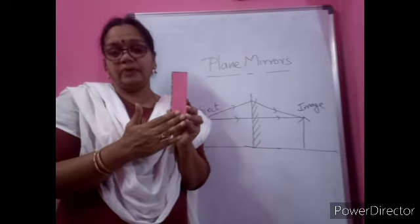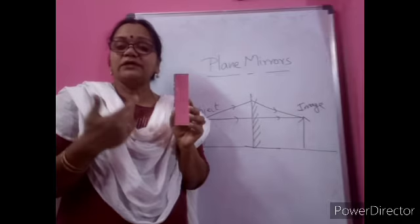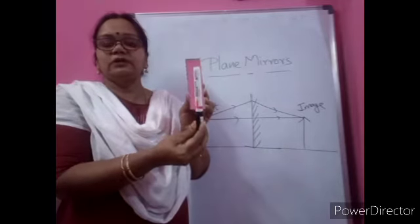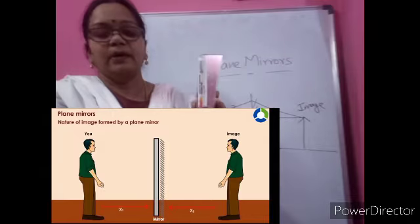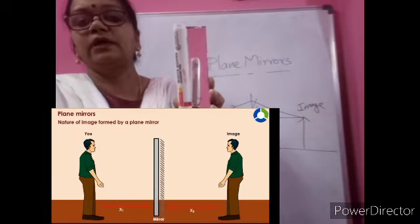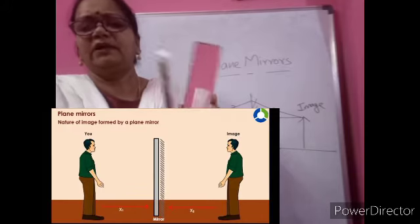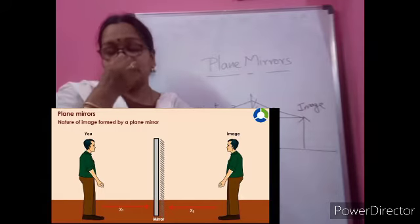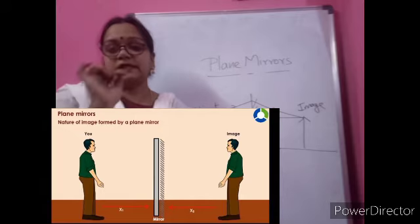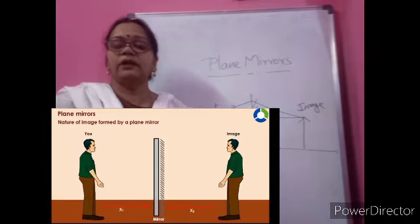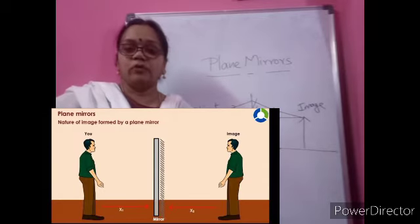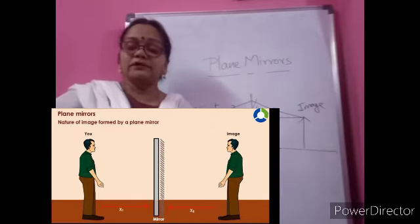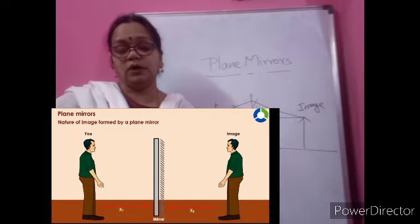Since it has a flat surface, it is called a plane mirror. We are going to learn about the images formed. For example, I am holding this pen — if you hold an object in front of a plane mirror, you can see the image of that object. All of you experience this every day when you see yourselves in the mirror. What you see inside the mirror is called the image. Today's class is about how images are formed on plane mirrors and what characteristics they have.